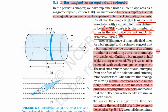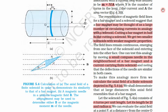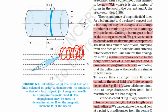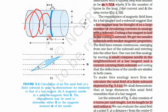Now we have to see the similarities between a bar magnet and this solenoid. A bar magnet may be thought of as a large number of circulating currents. If we take a bar magnet, we can think of it as having a large number of currents circulating inside it — making it very similar to a solenoid. Similarly, in a solenoid, large numbers of currents are circulating. This is the first way in which solenoid and bar magnets are equivalent.